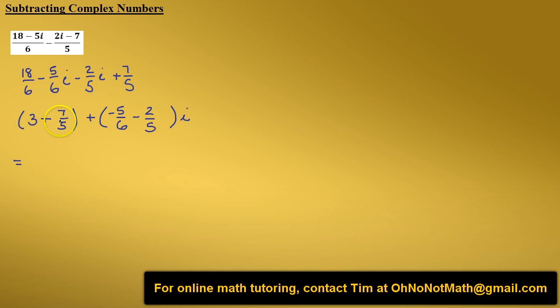So let's add 3 plus 7 fifths. Our least common denominator is 5, so we're going to have 5 in our denominators. This 3 can be written as 3 over 1. So we multiply 1 by 5 to get 5. Since we multiply the denominator by 5, we have to multiply our numerator by 5. 5 times 3 is 15, and then we just bring this 7 fifths down.